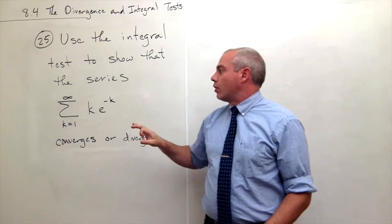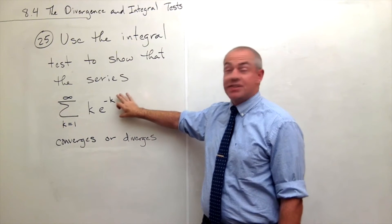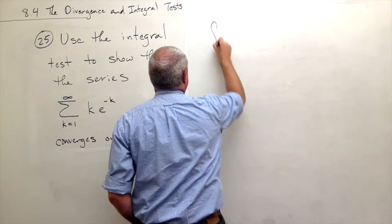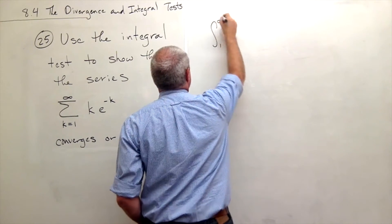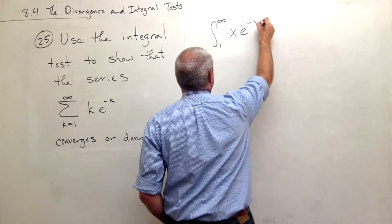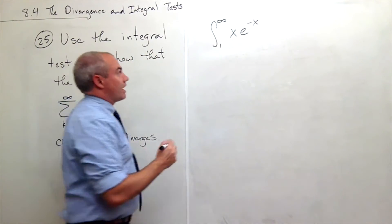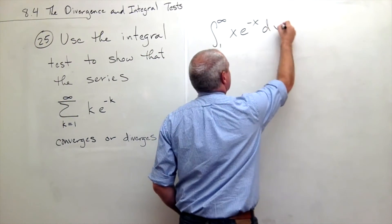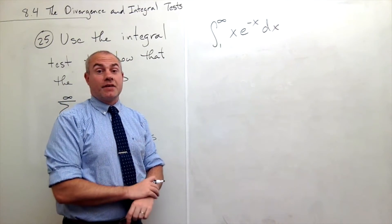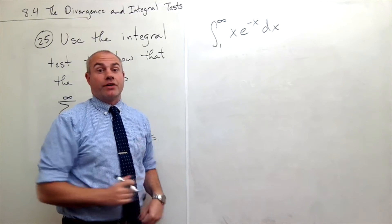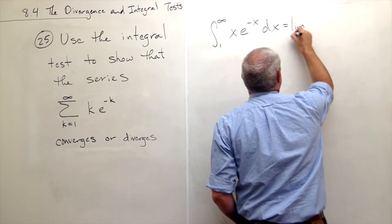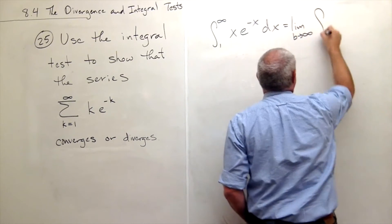The integral I want to look at to help figure out if this series converges or diverges is the integral from one to infinity of xe to the negative x dx. First of all, I see that this is an improper integral, so I'll rewrite it as a limit: the limit as B goes to infinity of the integral from one to B of xe to the negative x dx.